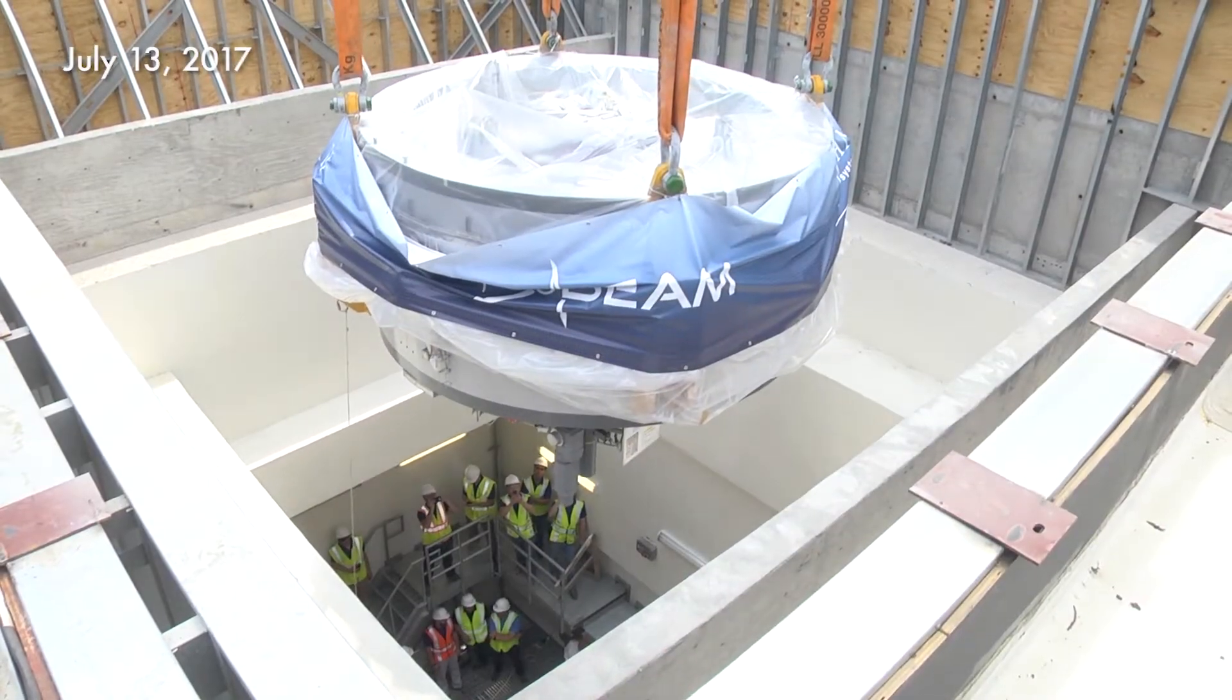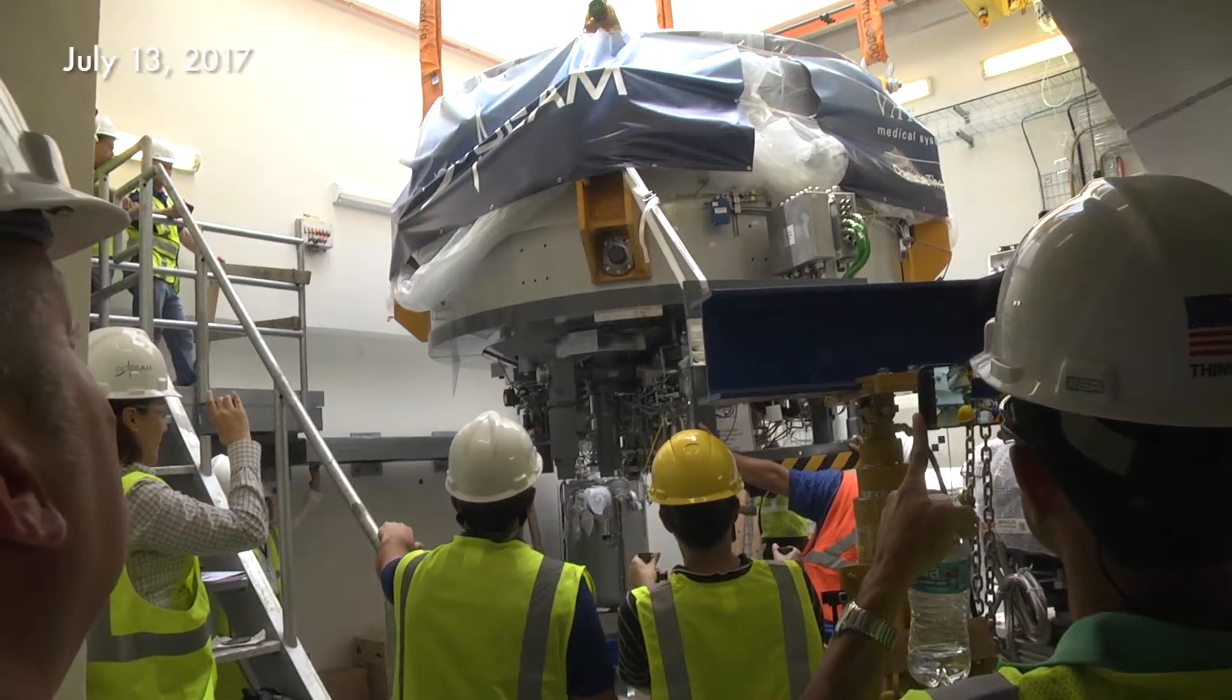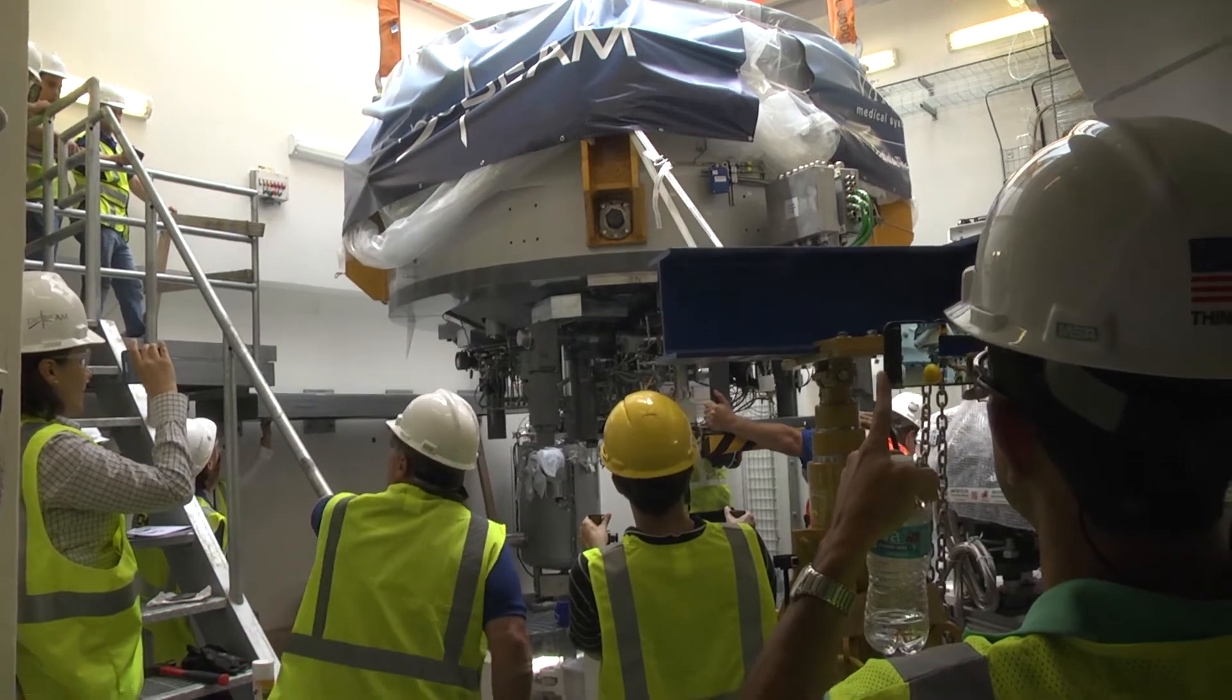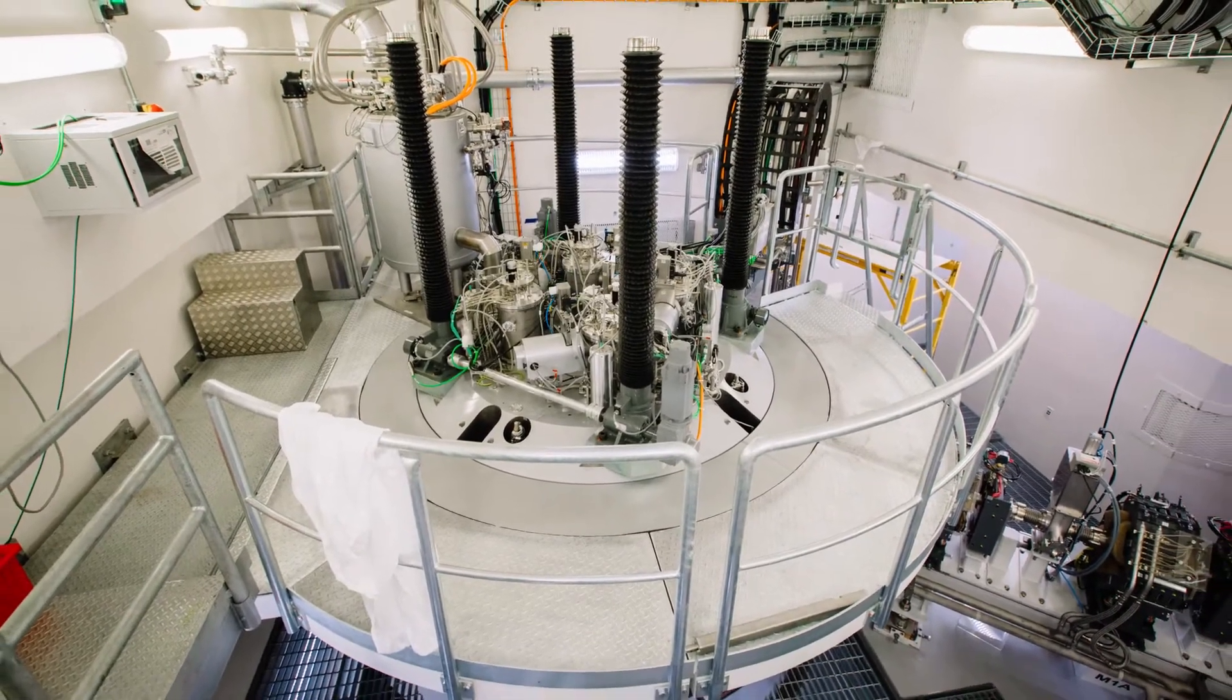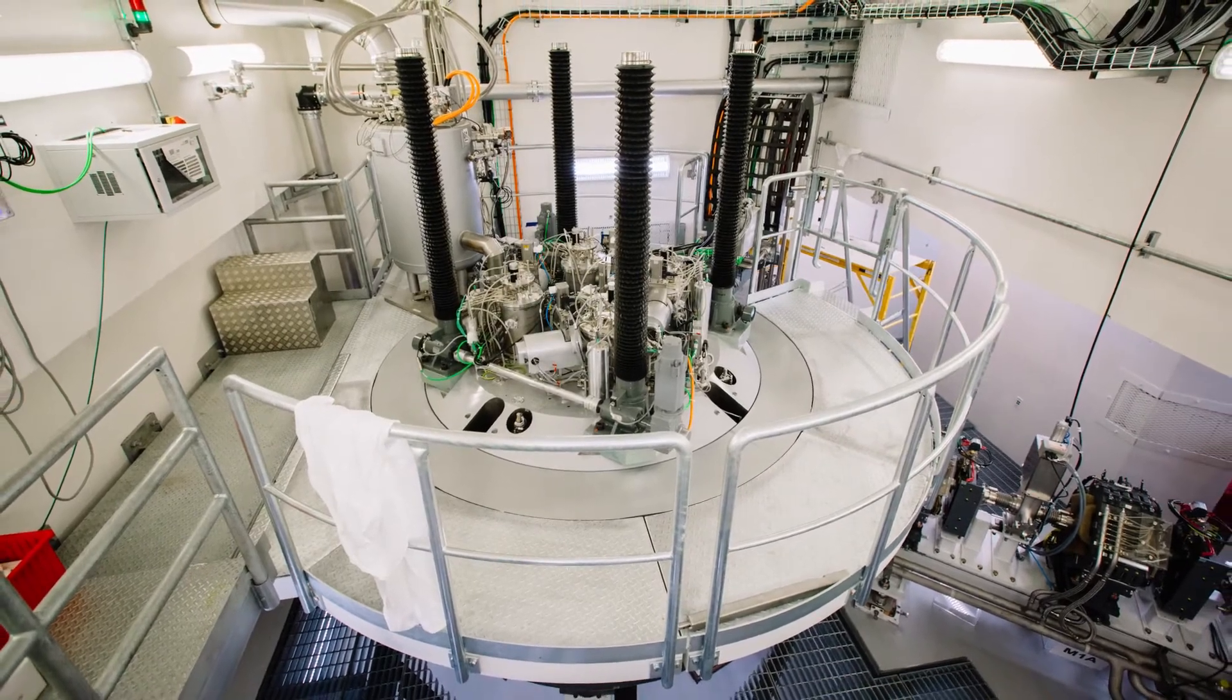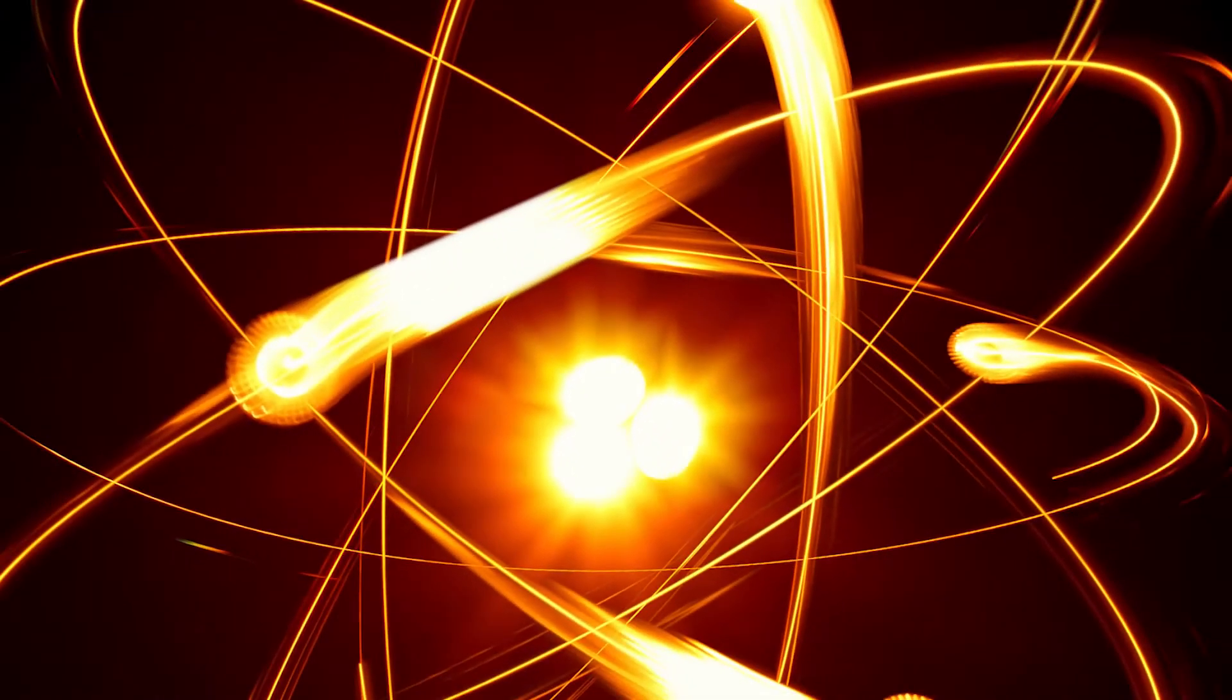This is the state-of-the-art superconducting cyclotron. The cyclotron is a particle accelerator that uses electromagnetic fields to speed up proton particles in an outward spiraling path, producing the proton beam used for treatment. A proton is a positively charged particle found in the nucleus or center of atoms.